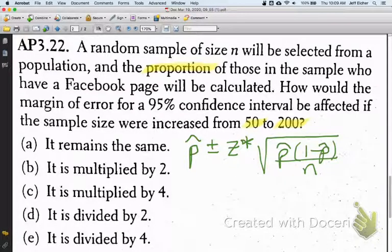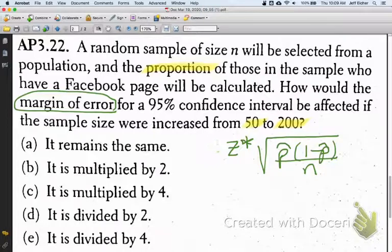And we're asked specifically for the margin of error, so the margin of error is just this latter part. We're asked, if we increase n, how will the confidence interval change? How will the margin of error change?